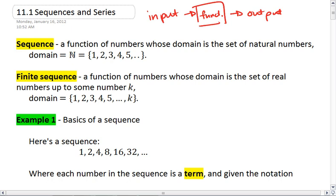If it's a sequence, our input, our domain, is going to be the natural numbers. So with this, we're going to plug in 1, and then 2, 3, 4, and so on. And that is always the domain of a sequence.